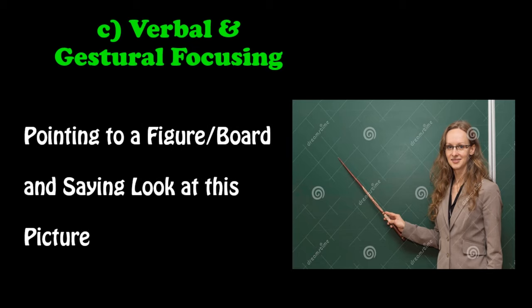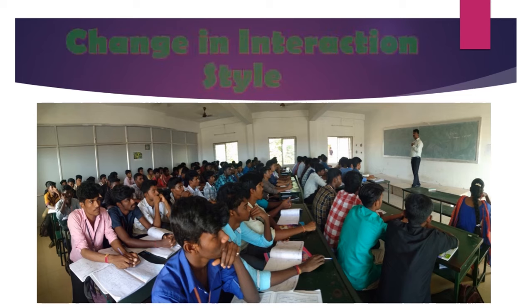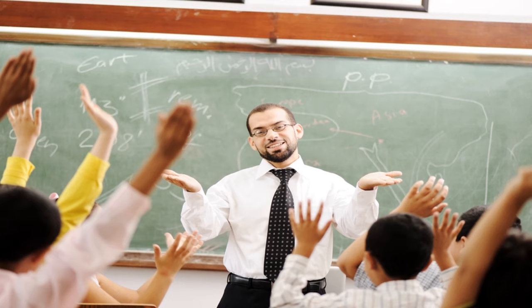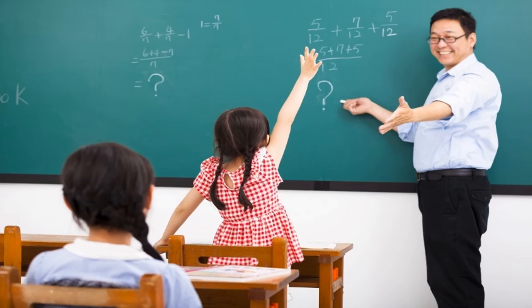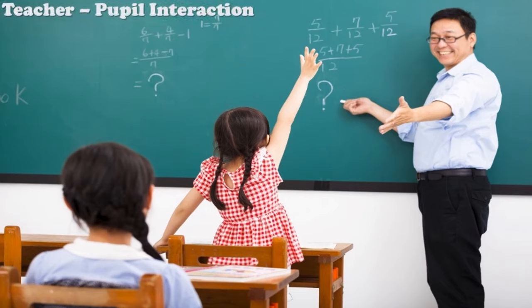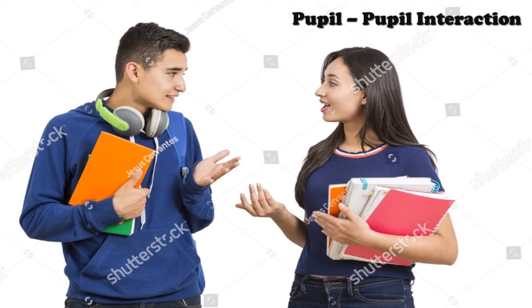The fifth component is change in interaction style. The communication that happens inside the classroom is termed as interaction. It may be of three styles: the first is teacher-pupils interaction, that is group interaction; the second is teacher-pupil interaction, that is individual interaction; and the third style is pupil-to-pupil interaction.